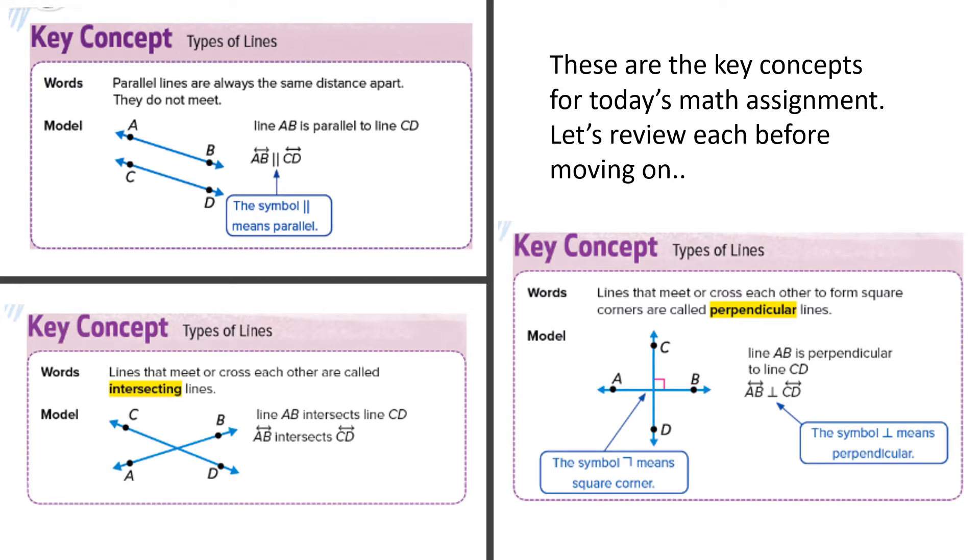These are the key concepts that you're going to be using today. Let's look at the top one on the left. Parallel lines. I'm sure you've heard of this before. When two lines are the same distance apart and they never meet, they will never intersect. So we have line AB and line CD that are parallel. And look at the two lines that there are right here in between to show that those are parallel.